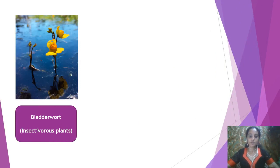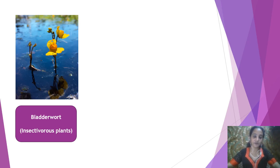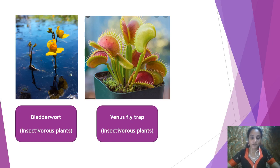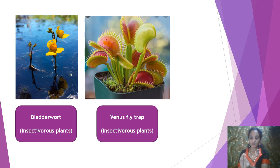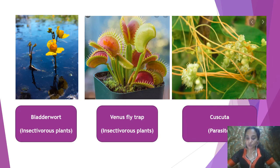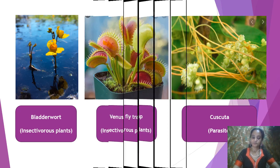Here is a picture of bladderwort — it is an insectivorous plant, see how beautiful it is. Here is another one, the Venus flytrap — again an insectivorous plant. Whenever insects come in, the plant closes its covering, that is why it is called a fly trap — it traps the insect. And this is Cuscuta — many might have seen this plant. It is a parasite that lives on other plants and extracts all the nutrients from them.